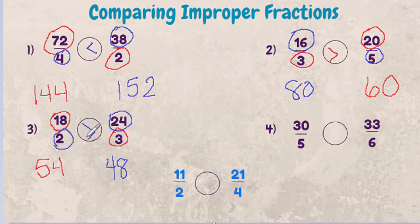So 18 halves is greater than 24 thirds. Last example, 30 fifths compared to 33 sixths.